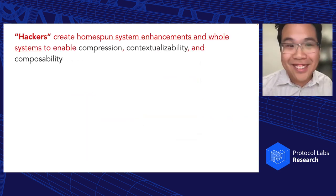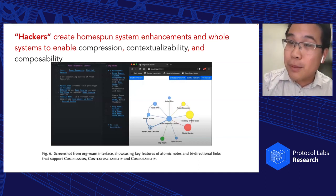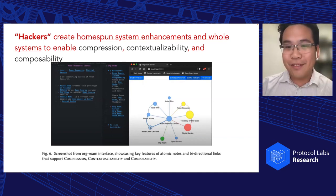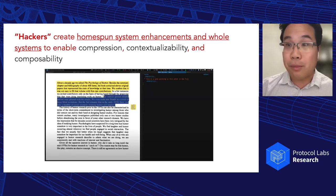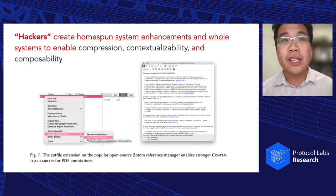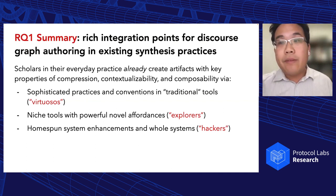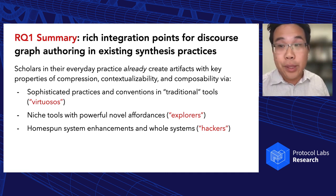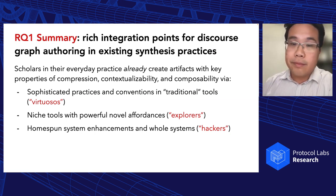We also have hackers who create homegrown systems to enable these features. The Org-mode Emacs community created an open source port of Roam Research's backlinks idea into Emacs. You can integrate annotation features into essentially a terminal. People also build on top of tools like Zotero to enhance contextualizability of notes — you can extract annotations in a way that allows you to jump back to the source PDF. Across all these settings, scholars in their everyday practice, without anyone telling them to, already create artifacts with key properties of compression, contextualizability, and composability.